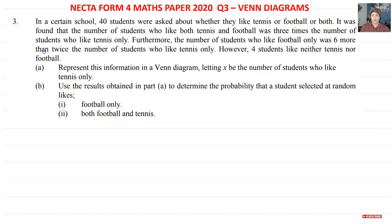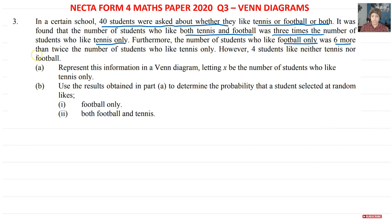We're told that in a certain school, 40 students were asked about whether they like tennis, football, or both. It was found that the number of students who like both tennis and football was three times the number who like tennis only. Furthermore, the number who like football only was six more than twice the number who like tennis only. However, four students like neither tennis nor football.